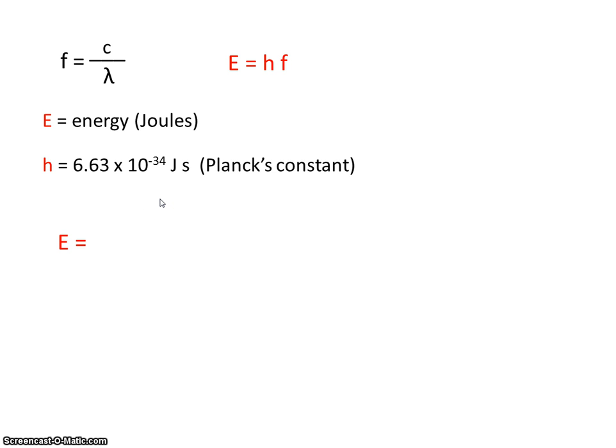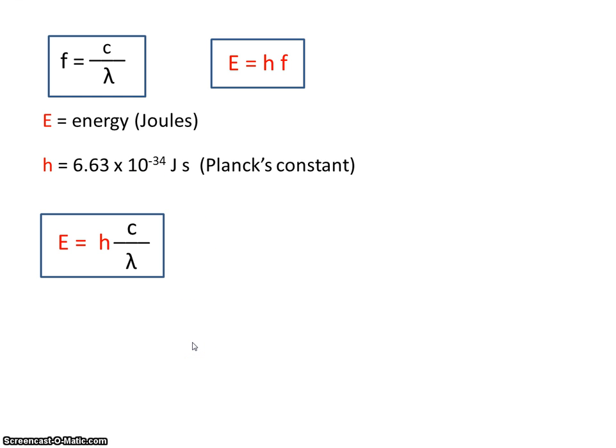So energy equals h times f. But you know that frequency equals c over lambda. So instead of writing f, we can substitute c over lambda. So we have two equations that we can combine to make a third equation. Make sure you have all three of these written down.